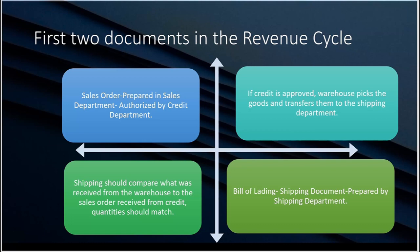If the credit department indicates that 100 cases of Snapple were approved, that should match what the warehouse sent over. Shipping should not assume that the warehouse knows how to count — shipping should recount what the warehouse sent over and make sure it matches what's on the approved sales order received from the credit department. This way we know that what was ordered and approved was just sent over from the warehouse.